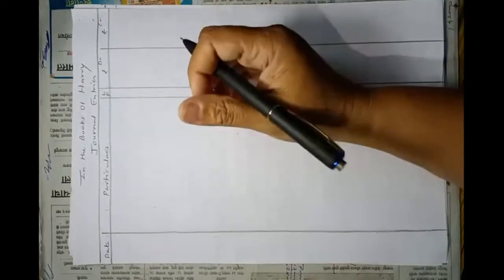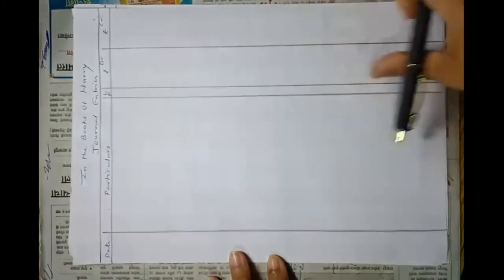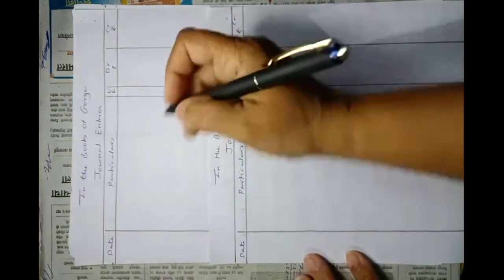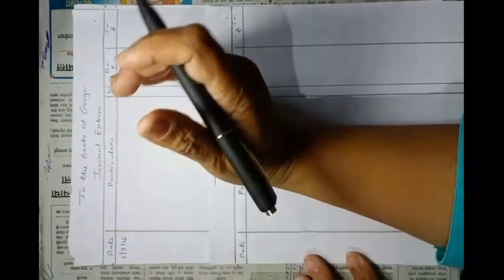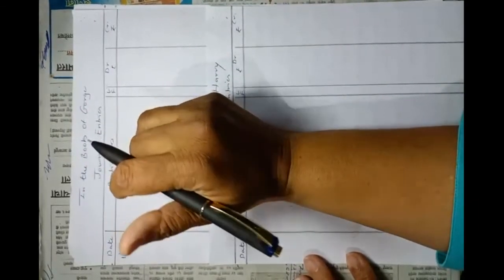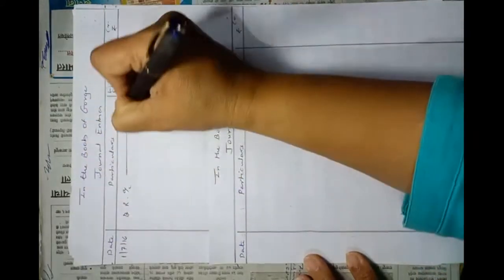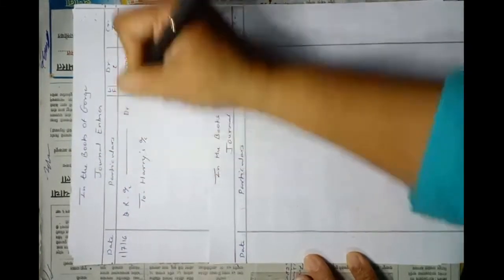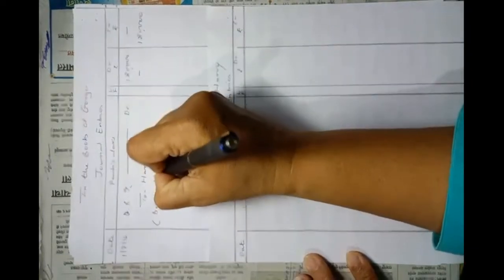On 1st July 2016, George drew a bill for Rs. 1,80,000 for three months on Harry, and Harry accepted it. As Harry accepted the bill, Harry is the drawee and George is the drawer. So in the books of George, Bills Receivable account debit Rs. 1,80,000 to Harry's account Rs. 1,80,000.